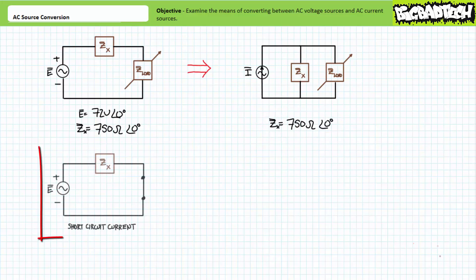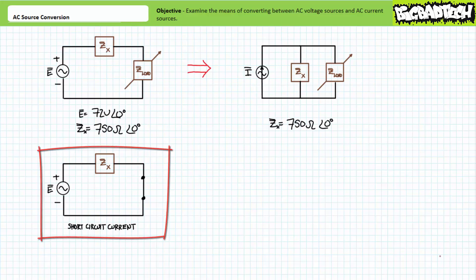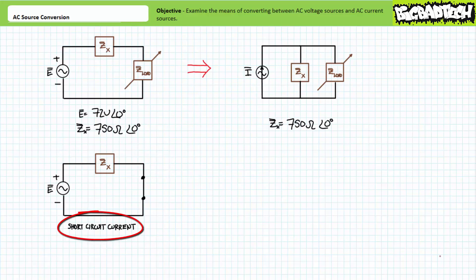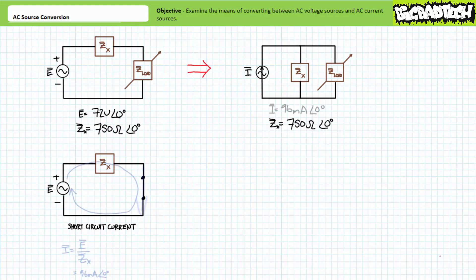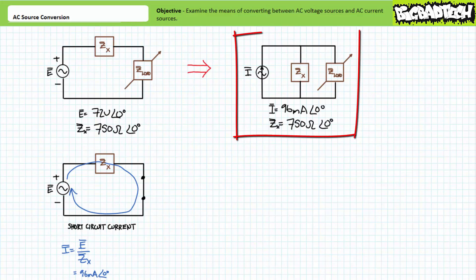Tracking so far? To determine the value of the equivalent current source, one must remove the variable load impedance and solve for the short circuit current. When a low impedance short circuit is placed across the load terminals, only the fixed series impedance opposes the voltage source. An application of Ohm's Law demonstrates this is a value of 96 milliamperes at an angle of 0 degrees. Our equivalent source configuration is therefore a 96 milliampere at an angle of 0 degree current source in parallel with a fixed impedance of 750 ohms at an angle of 0 degrees.